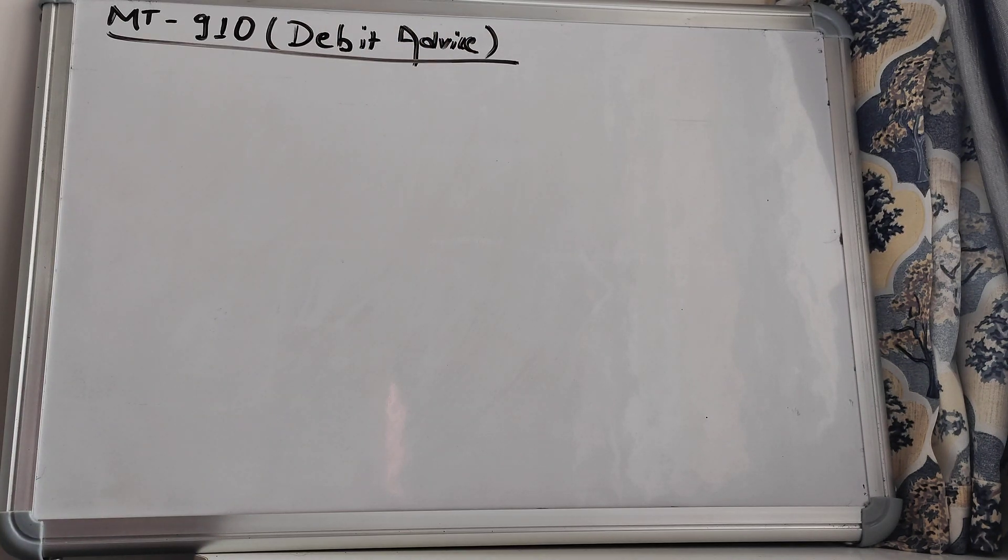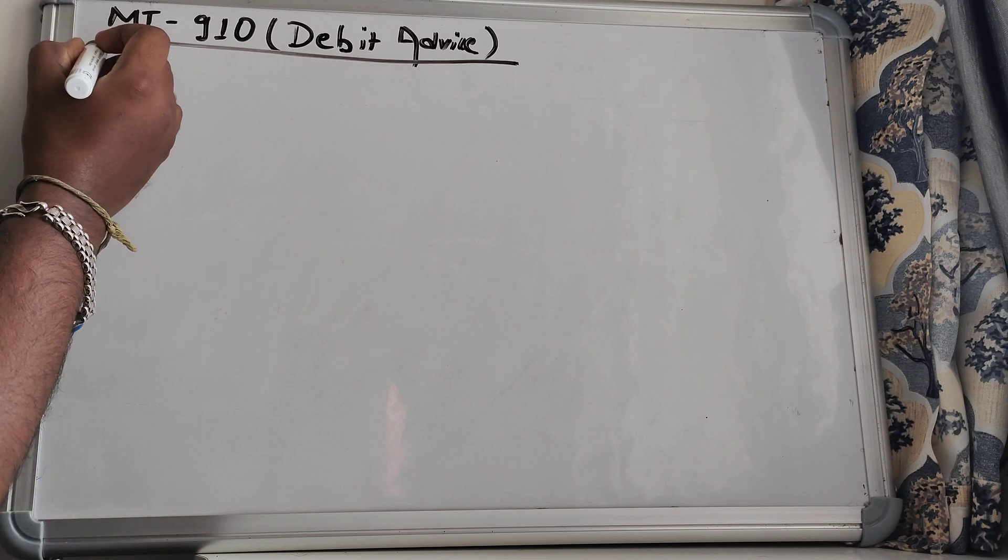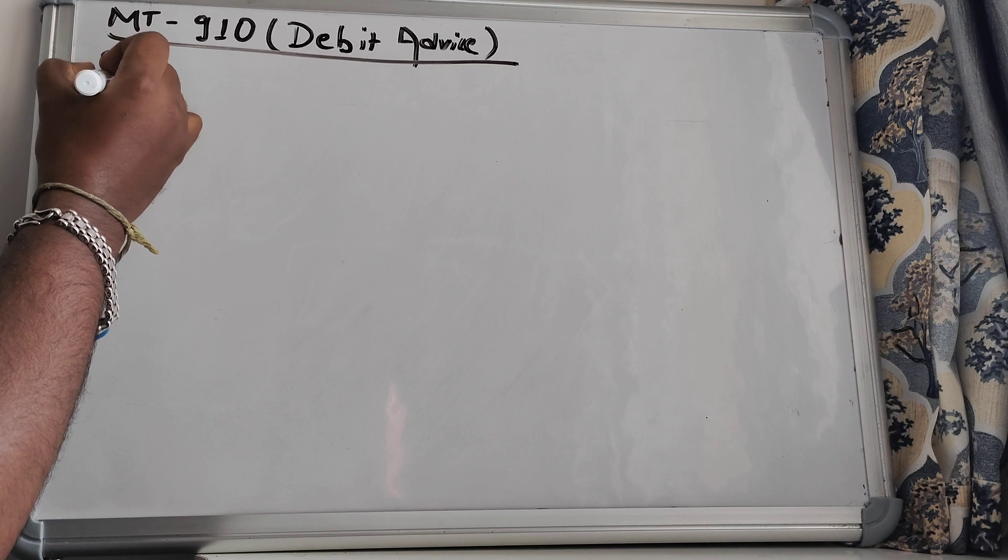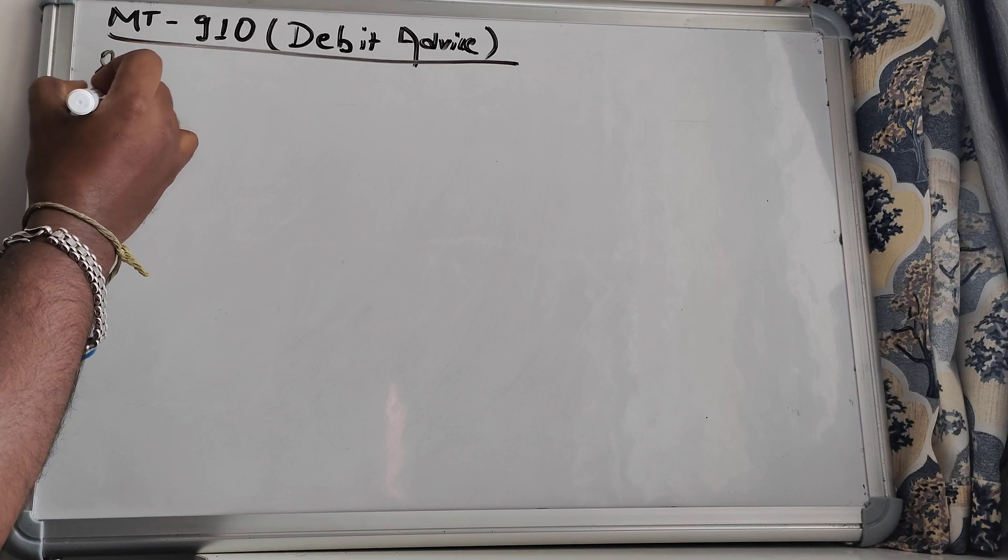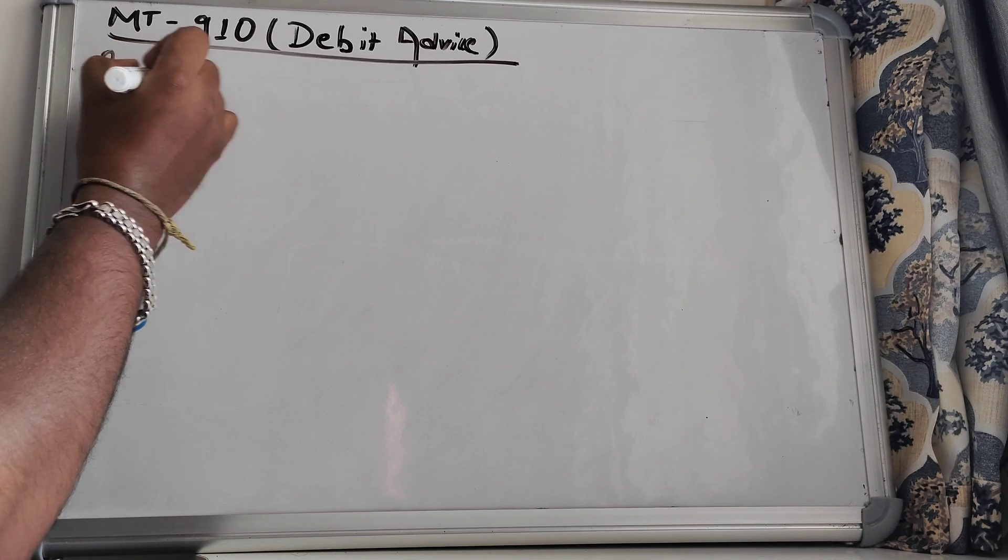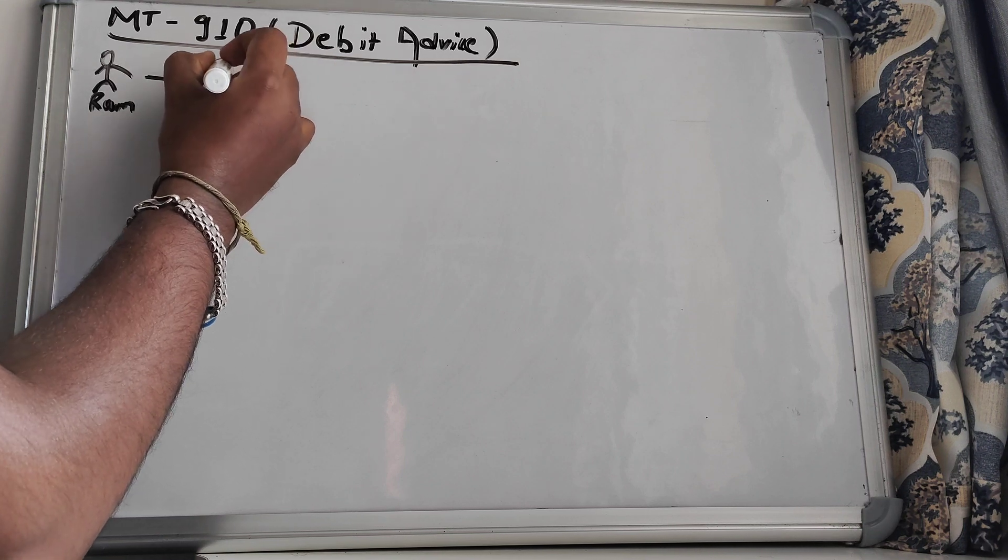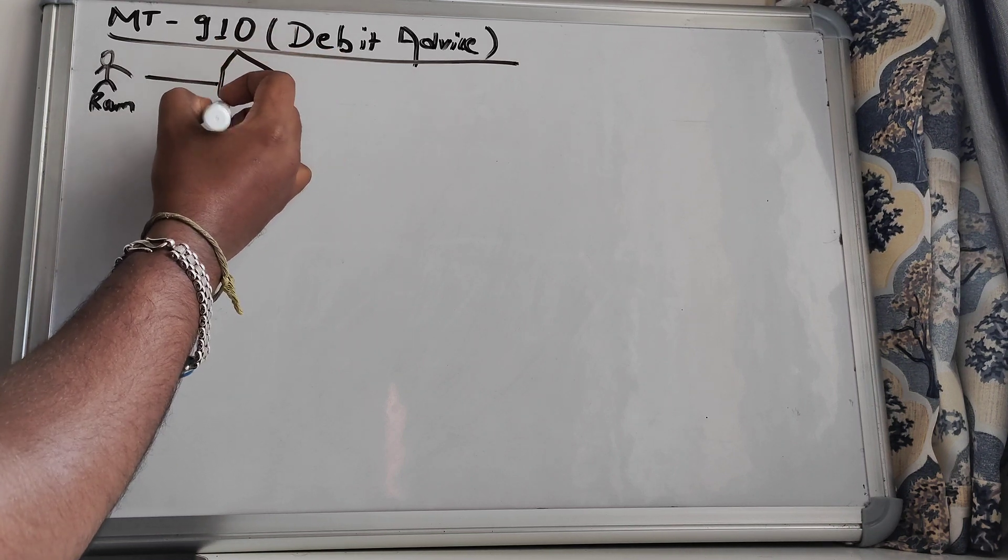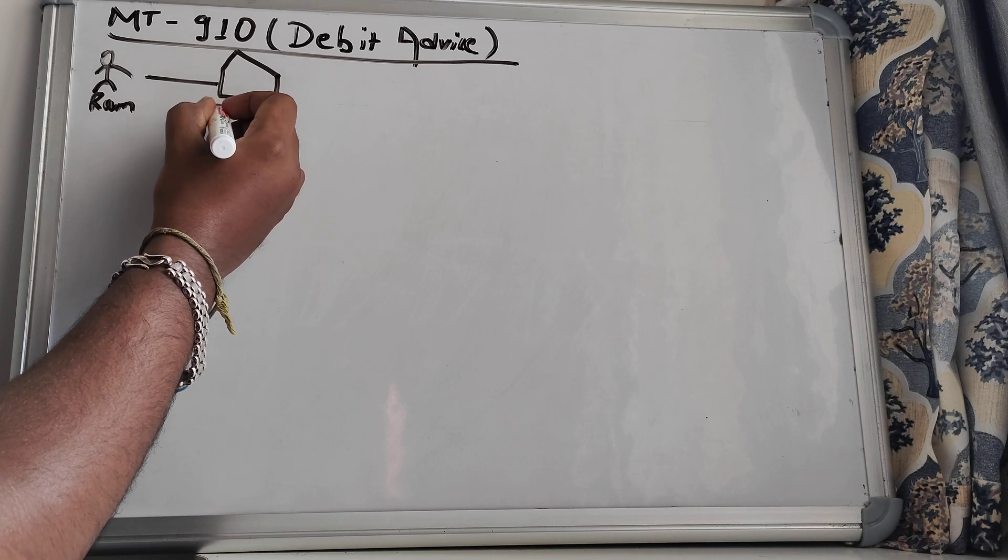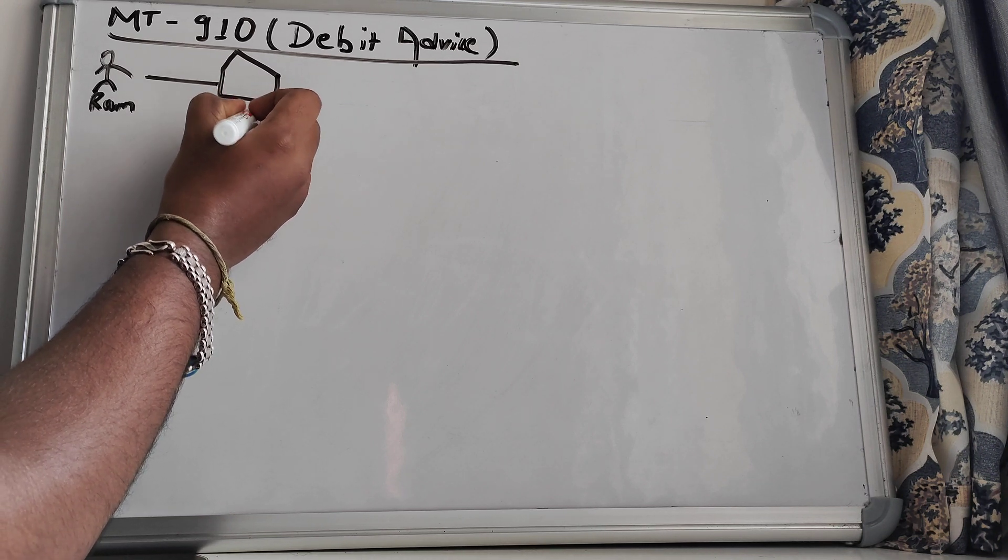To explain this, let's take our popular example. In this case, we will take a two participant scenario. So let's say this is our Axis Bank. Now let's say this is our State Bank of India.